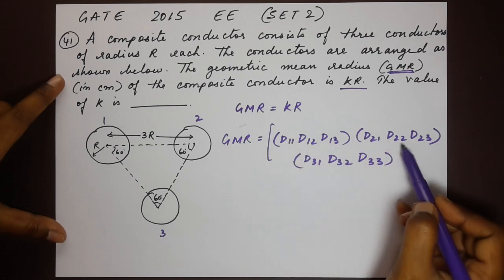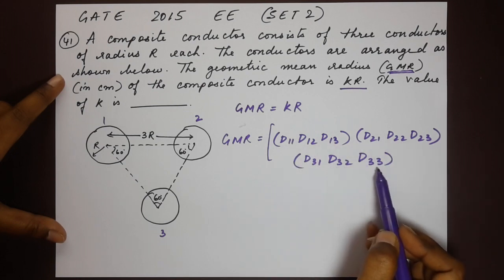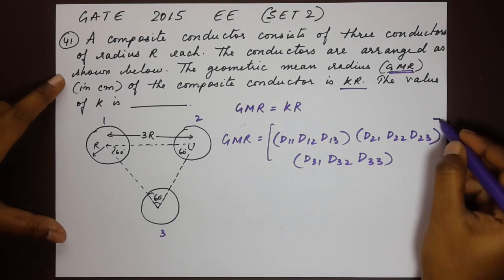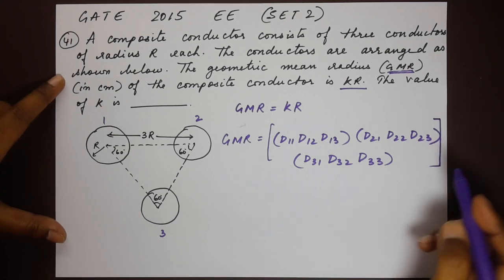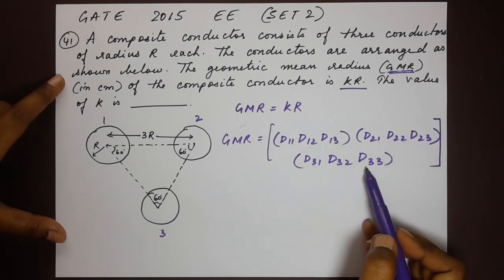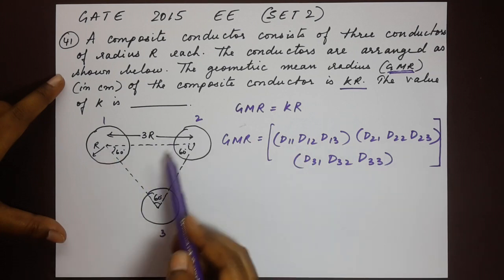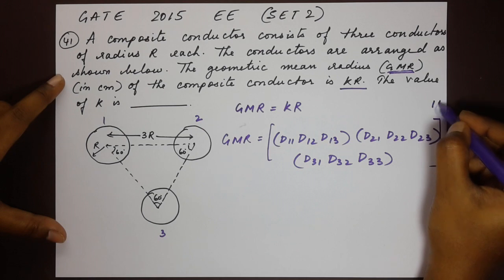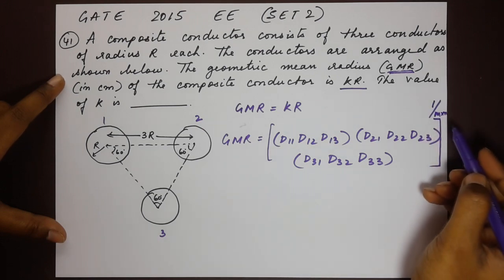Now d11, d22 and d33 are the factions radius. I will write down what that means a little later on. But first we will just note down the formula. Now the formula is this - the various distances between the conductors to the power of 1 divided by m times n. I hope that is visible there.